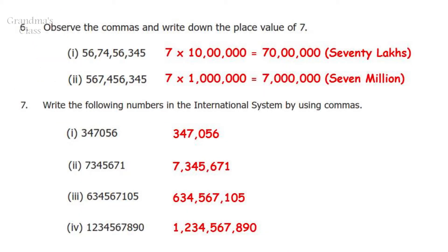Question 6: Observe the commas and write down the place value of 7. The first number is represented in the Indian system. Hence, the place value of 7 is 7 into 10 lakhs, which is 70 lakhs. The second number is represented in the international system. Hence, the place value of 7 is 7 into 1 million, which is 7 million.